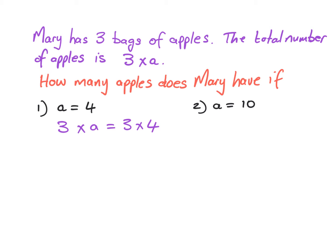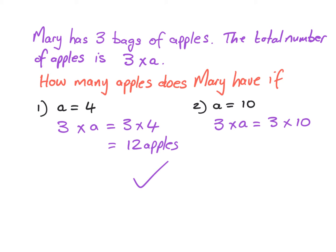The expression is three times a. For question one, substituting a equals four: three times four equals twelve, so Mary has twelve apples. For question two, three times a with a equals ten: three times ten gives thirty apples.